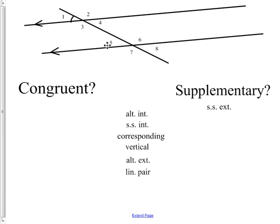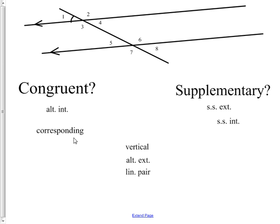Alternate interior angles, like five and four: these are both acute and the same angle, so alternate interior angles are congruent. Same side interior, like five and three: those are definitely different angles — they add up to 180, so they're supplementary. Corresponding angles, like one and five: these are the same — if you slide one intersection up, five lies right on top of one, so they're congruent. Vertical angles, like six and seven: those are the same, so they're congruent. Alternate exterior angles, like eight and one: they're on the exterior and different sides of the transversal, and they are the same, so they're congruent.